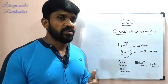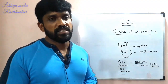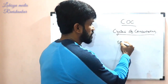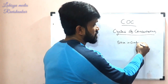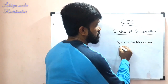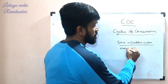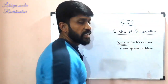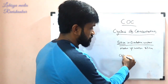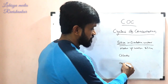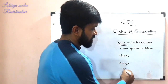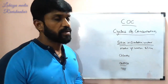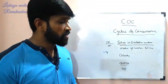Higher COC means better water conservation and energy efficiency — less makeup water is consumed. The COC formula is: COC equals the parameter value in circulation water divided by the parameter value in makeup water. For example, silica at 25 ppm makeup versus 100 ppm circulation gives 4 COC.